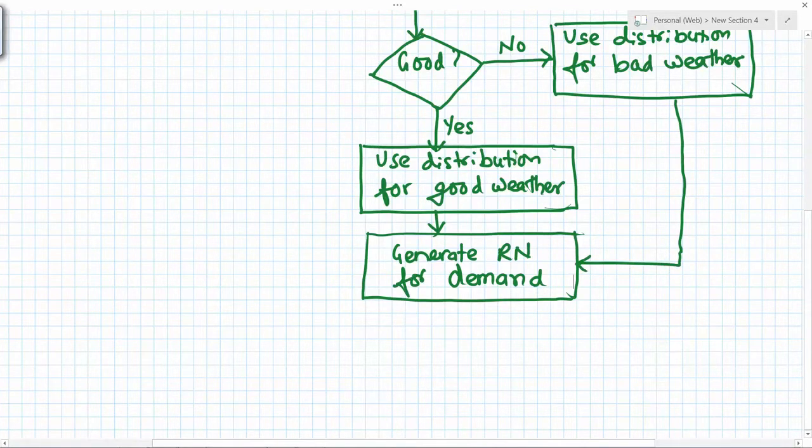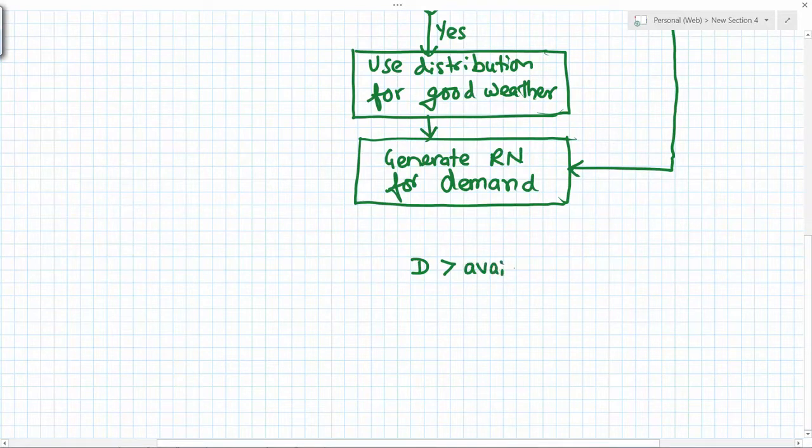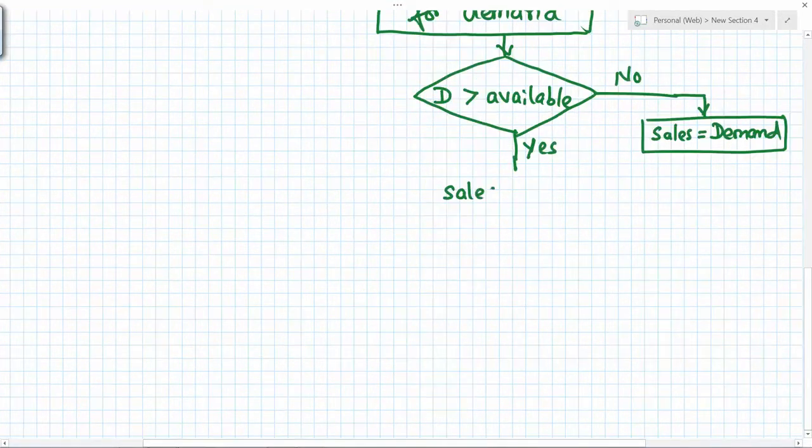Now the next question we ask is whether demand is greater than the number available. If the answer is no, then we have sales equal to demand. If the answer is yes, then we have sales equals number available.